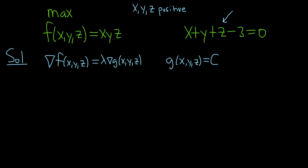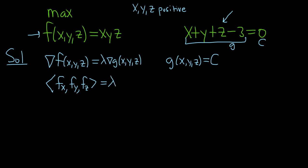So we solve this equation, we get our x, y, z, we plug it back into f and we get our maximum. In this problem, this is our g and this is our c. Recall the gradient is the vector whose components are the first partial derivatives: the partial of f with respect to x, the partial of f with respect to y, and the partial of f with respect to z. This should be equal to lambda times the partial of g with respect to x, the partial of g with respect to y, and the partial of g with respect to z.